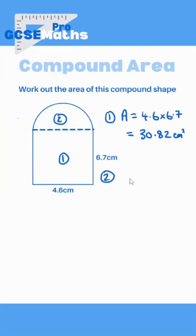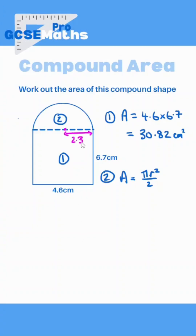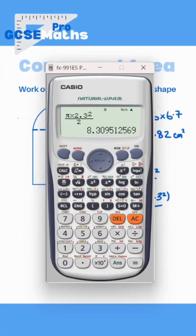Secondly, we want to work out the semicircle. The formula for the area of a semicircle is pi r squared divided by 2. Now the only thing we need there is the radius. The radius is the distance halfway across the circle to the center. So if you have a look, that's clearly going to be half of the 4.6, which is 2.3. So for the area we've got pi times 2.3 squared over 2, which gives us 8.31 to two decimal places.